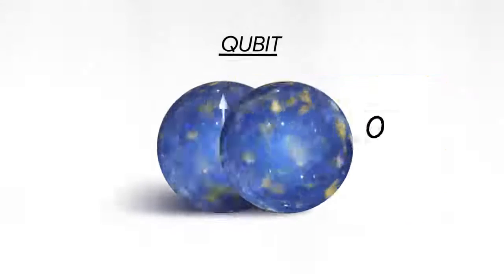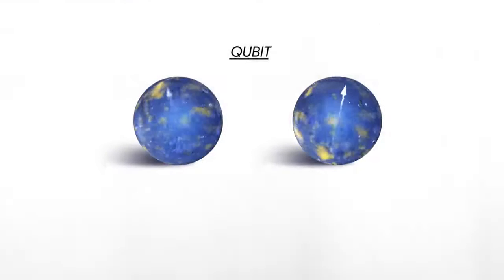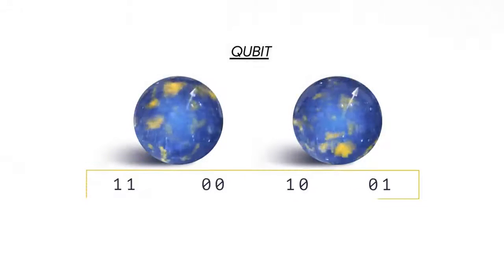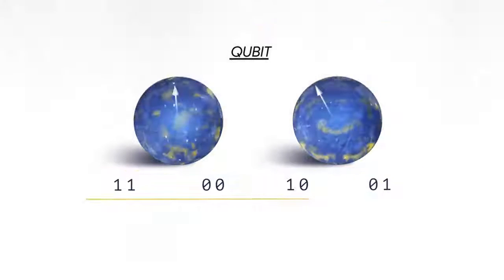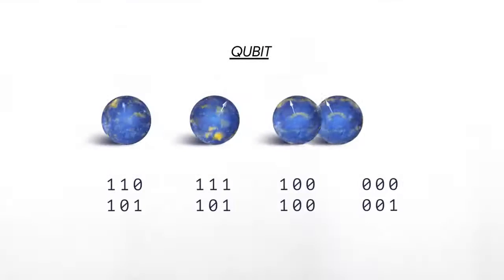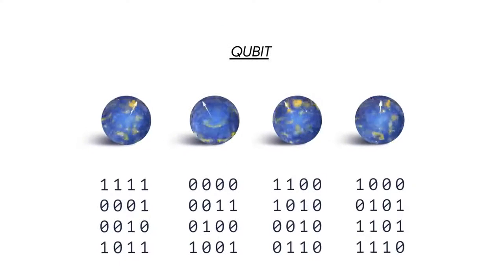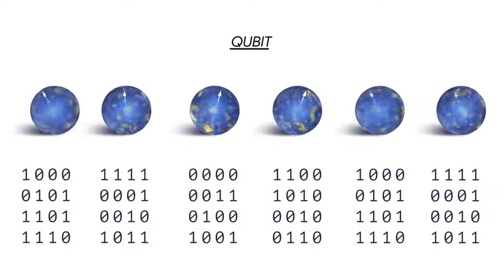If you have two quantum bits, then there are four possible states that you can put in superposition. With three qubits it's eight, four qubits it's 16 — it grows exponentially.